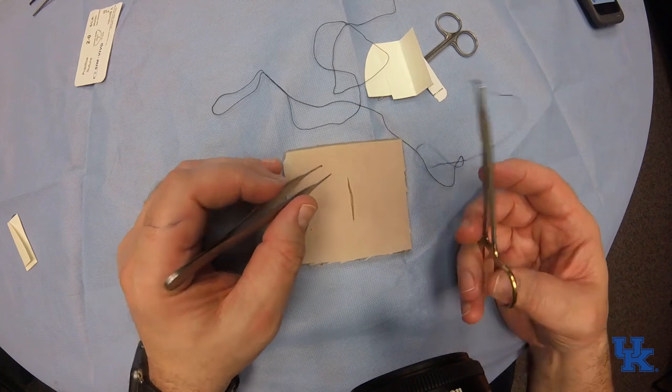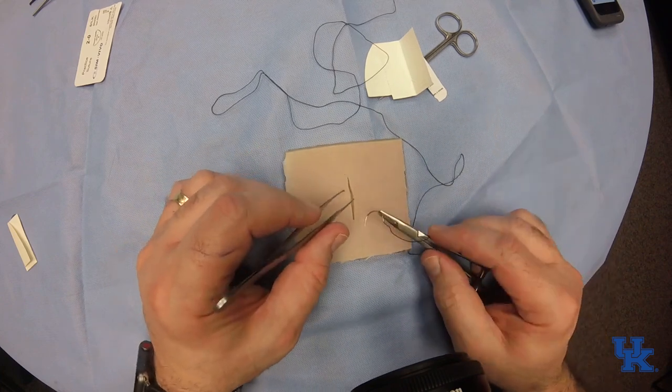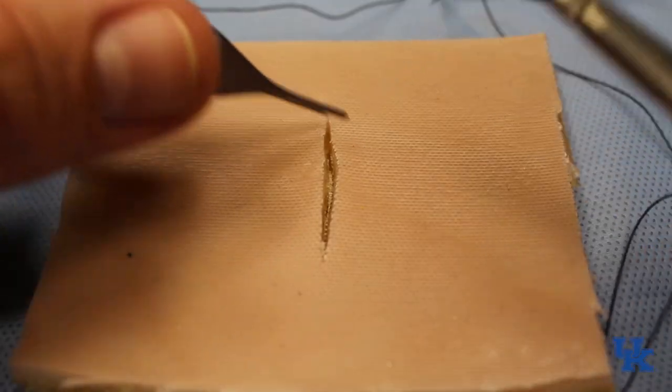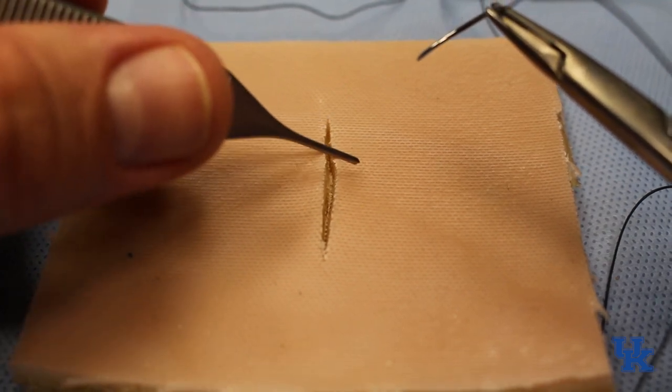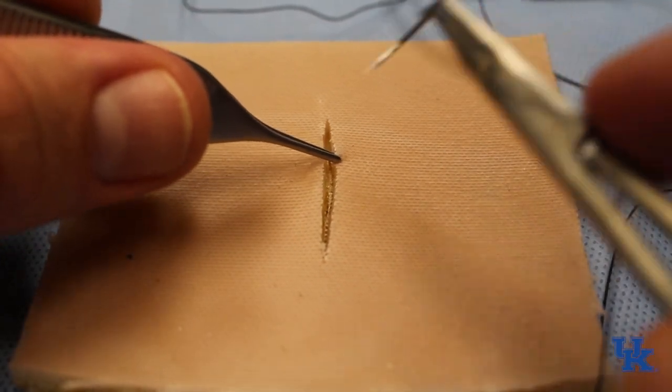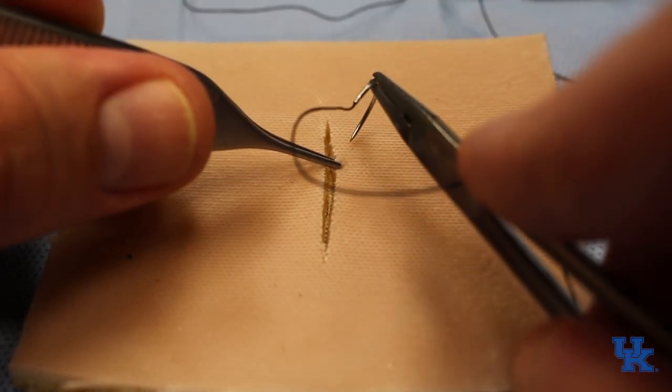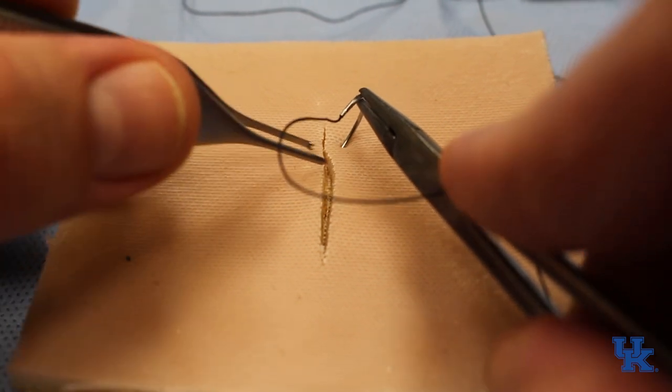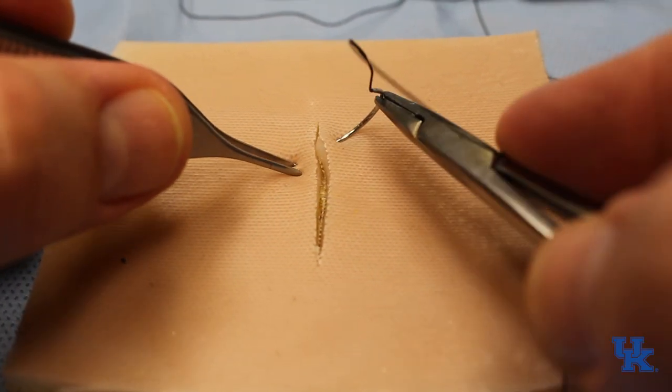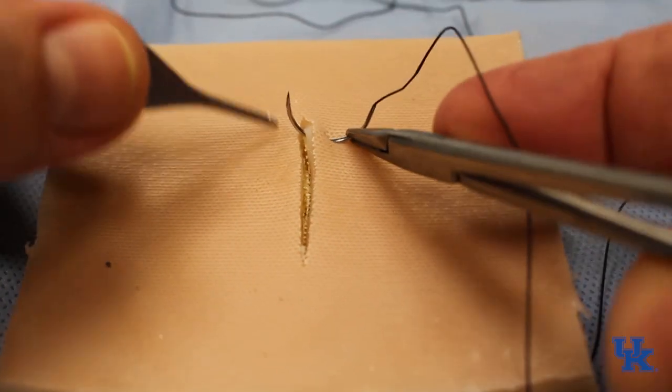This is some artificial skin that is made actually in our lab, and there's a nice defect in it. What we're going to do is throw a stitch. We're going to grab the tissue and try and enter perpendicularly, and engage the tissue that you want to close before turning the needle.